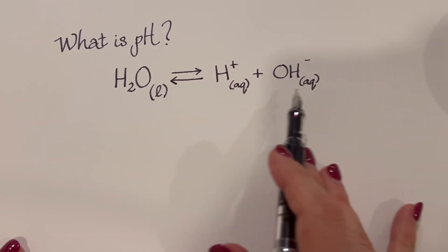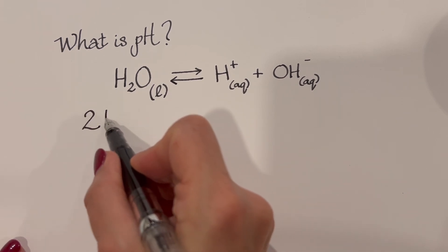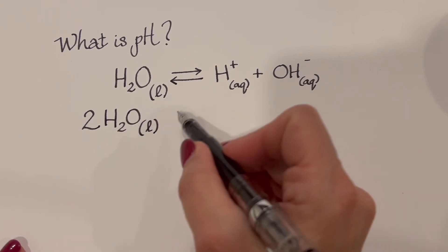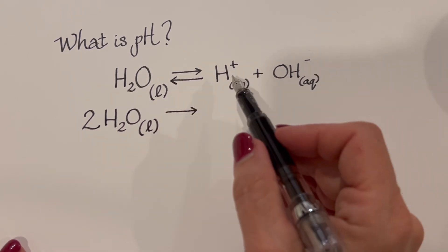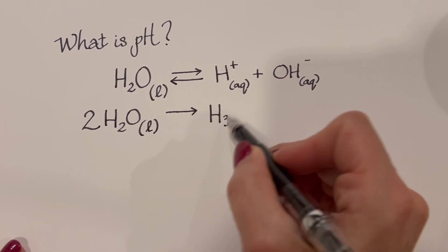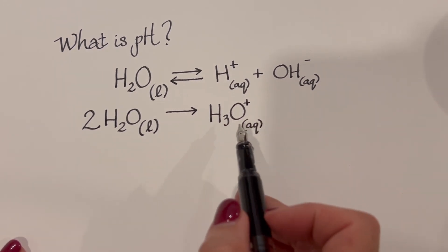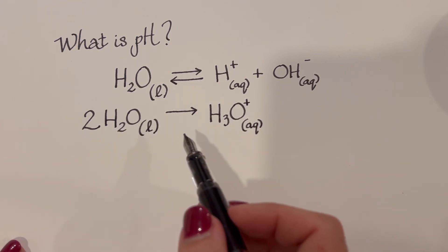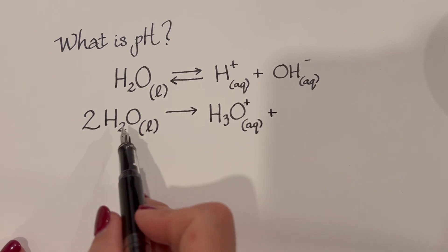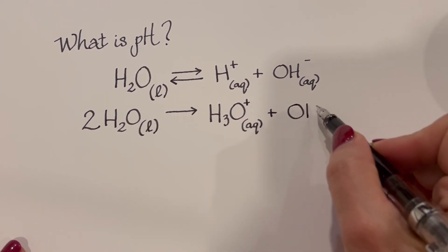There's another way to express this, where we have two water molecules that react together, and one of them is gaining a hydrogen ion from the other one. That means it creates the hydronium ion, H3O+, which, when that happens, is surrounded by all the other water molecules. So we have H3O+, and the other water molecule that gave up the hydrogen ion then becomes hydroxide.